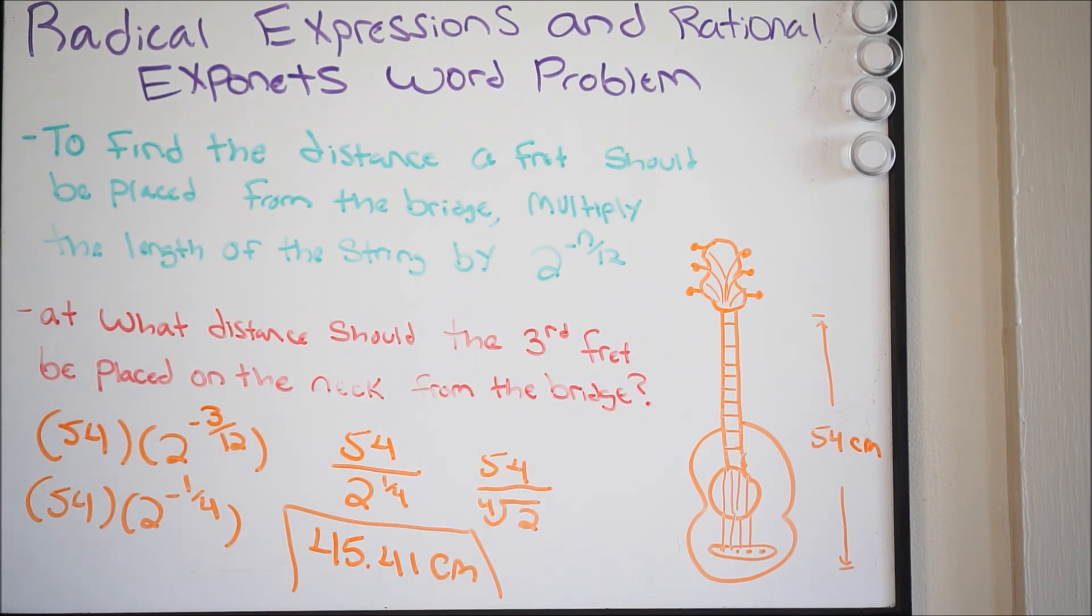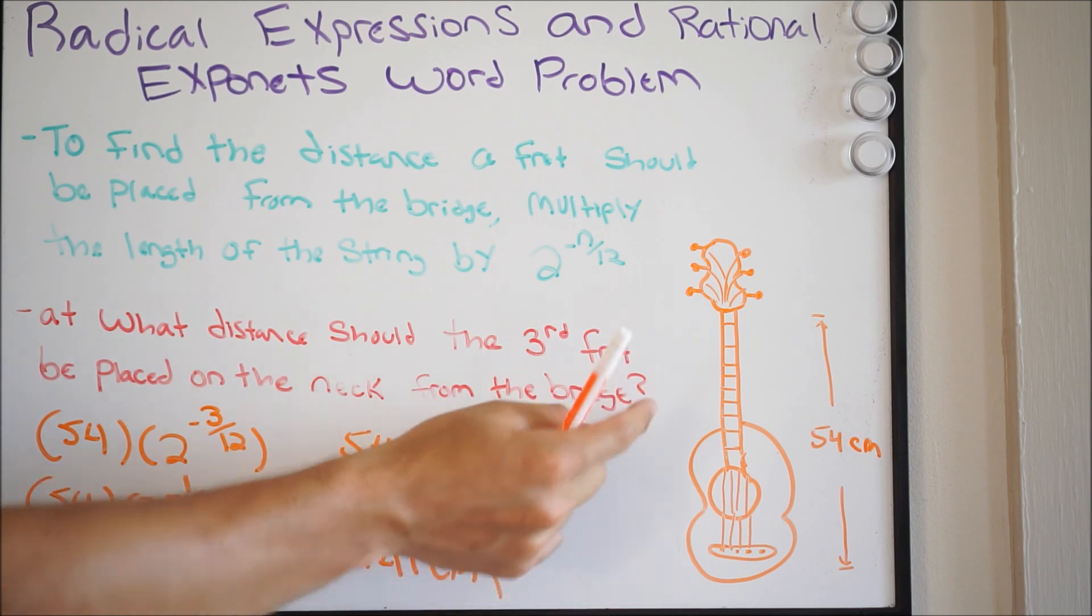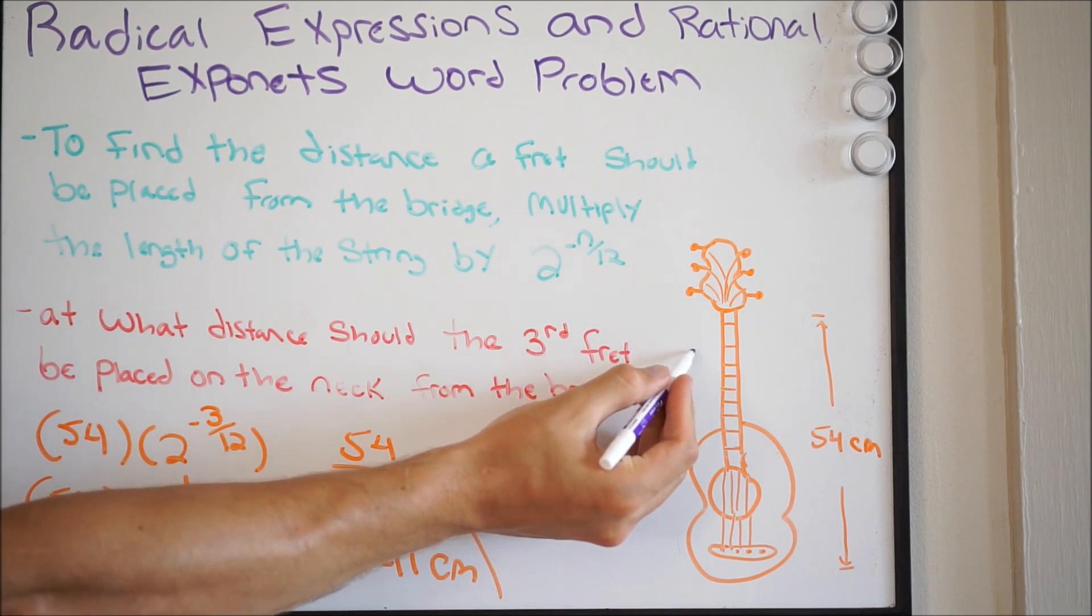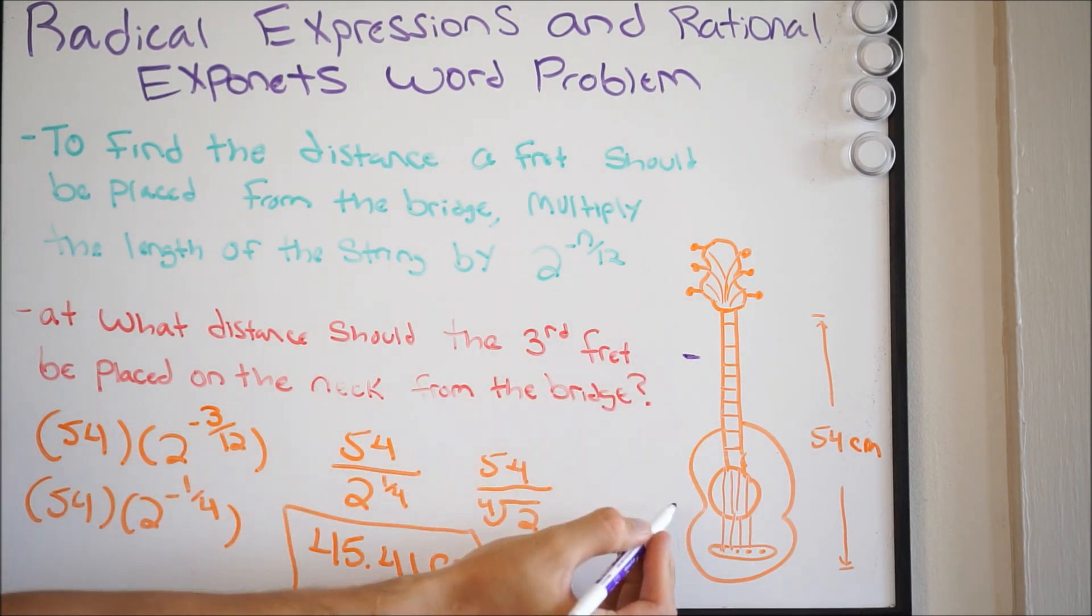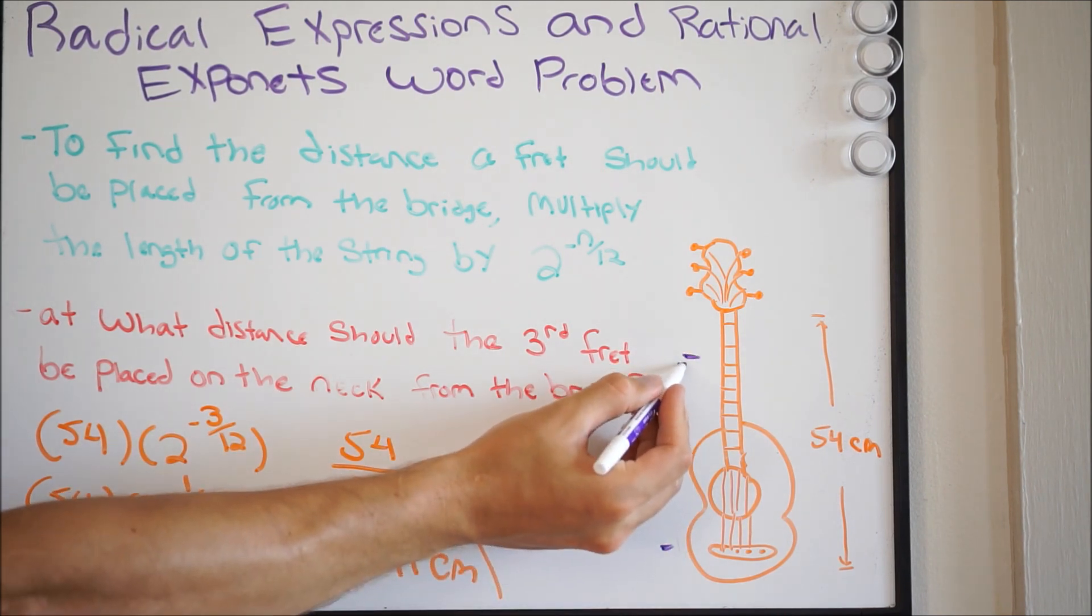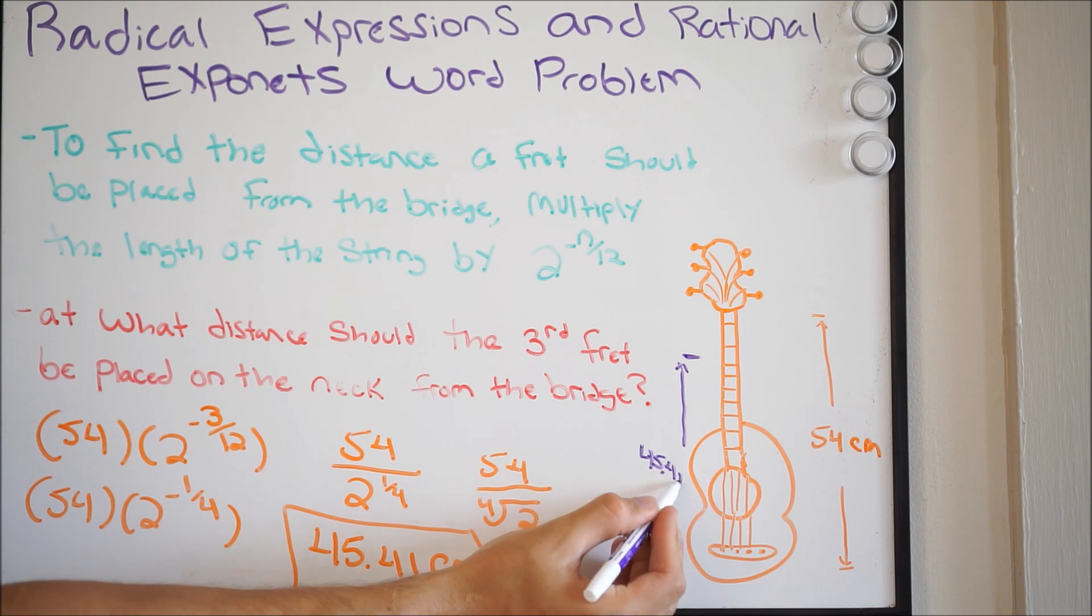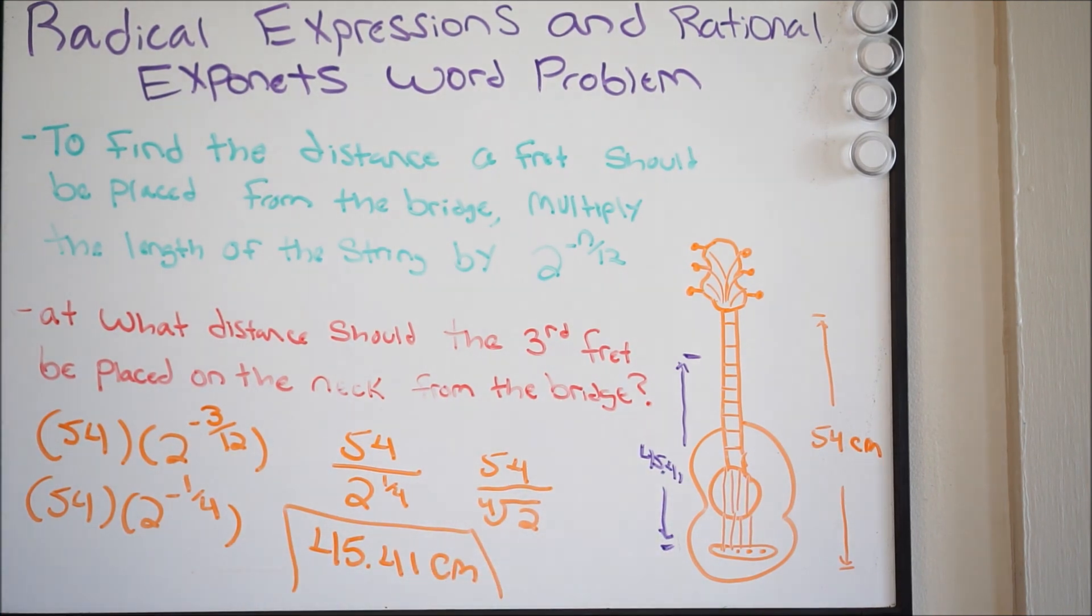So that is the distance the third fret needs to be going from the bridge and up the neck. So you would suspect that it would put you somewhere around here, is where the third fret would probably be. This would be your distance of 45.41, and that's that.